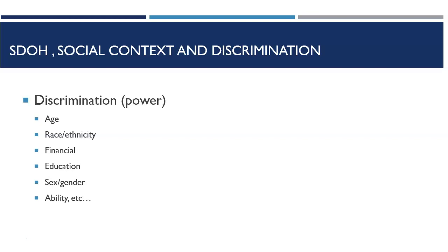People who are financially better off are treated better than those who are not. For example, in an emergency room, someone dressed in appropriate attire receives better treatment than someone who looks poor. People who are highly educated are also treated differently. Regarding sex and gender, females are not taken as seriously as males in health care. People who do not conform to expected gender identification or sexual orientation typically do not receive the same type of treatment as those who do adhere to those expectations.